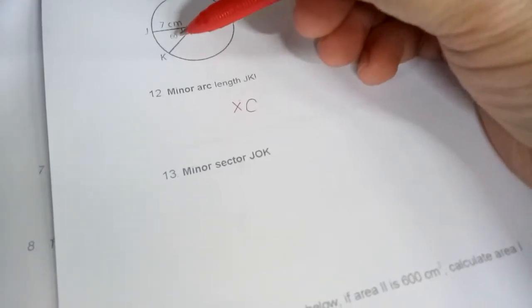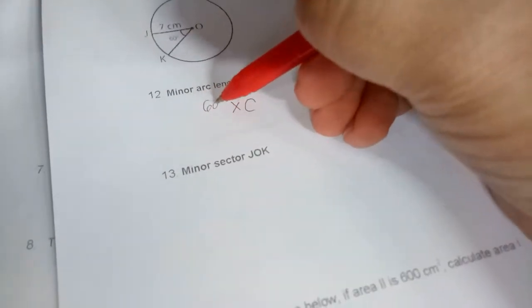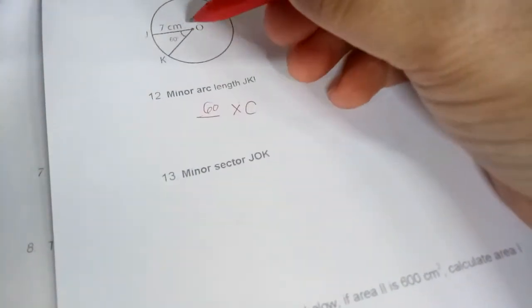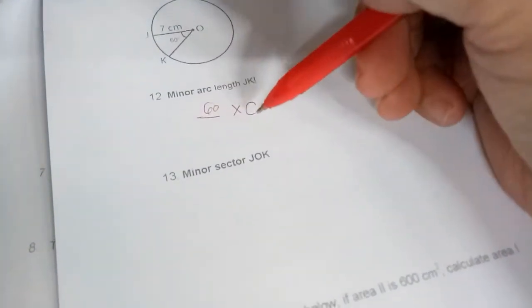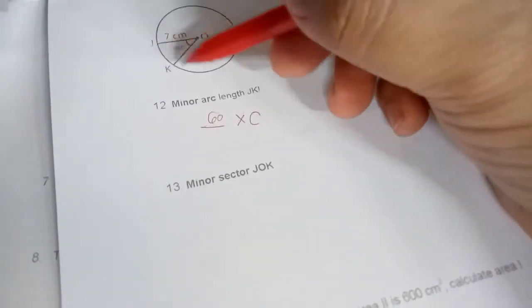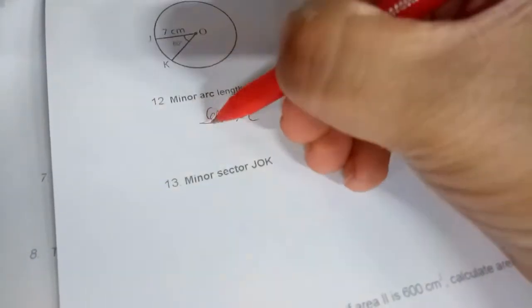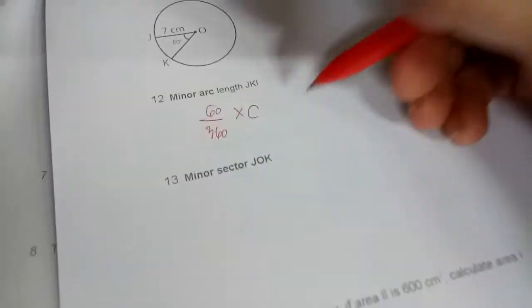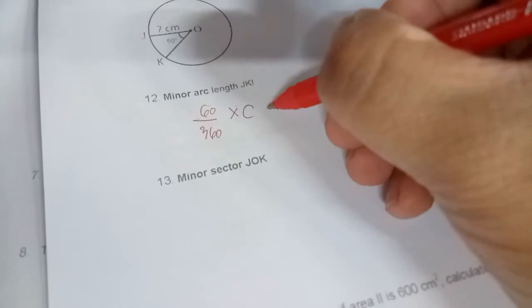The arc when it's 360 degrees is the full circumference, so it's 60 over 360 times the circumference. We know that the circumference is πD or 2πR.